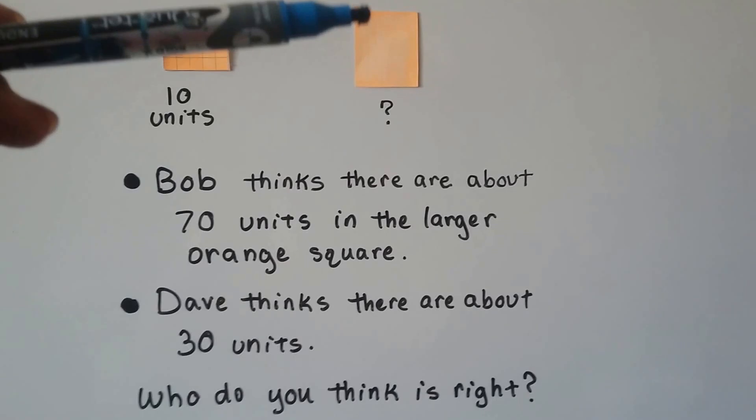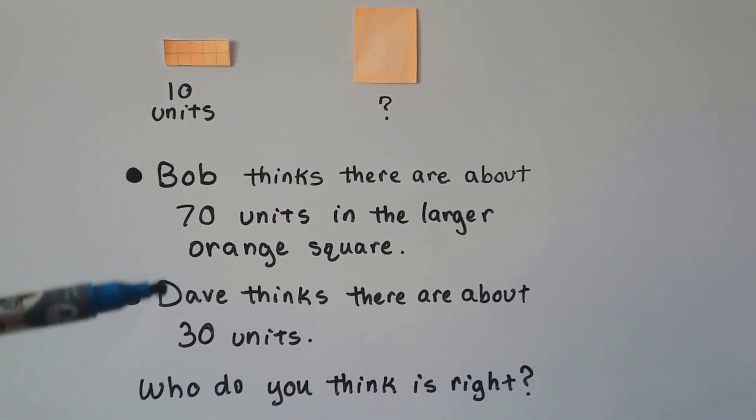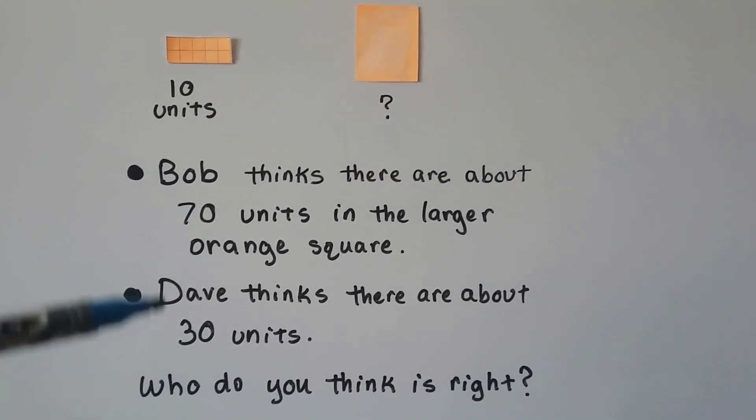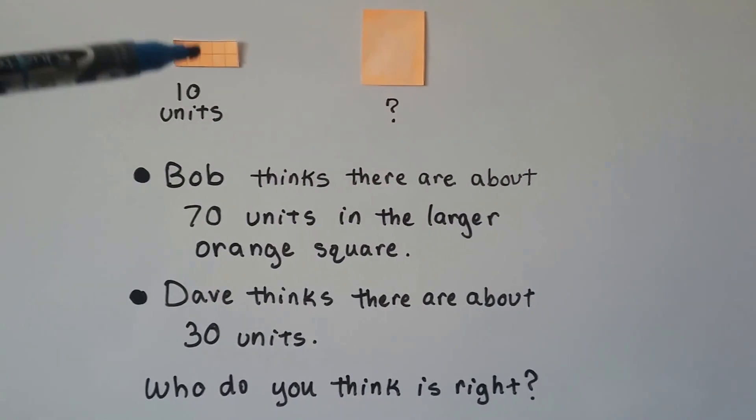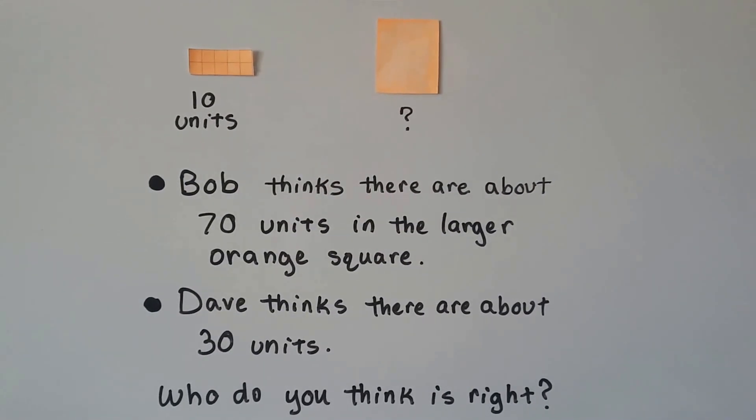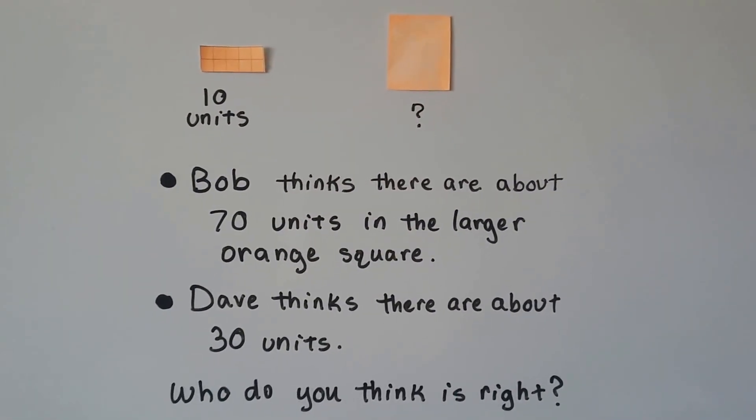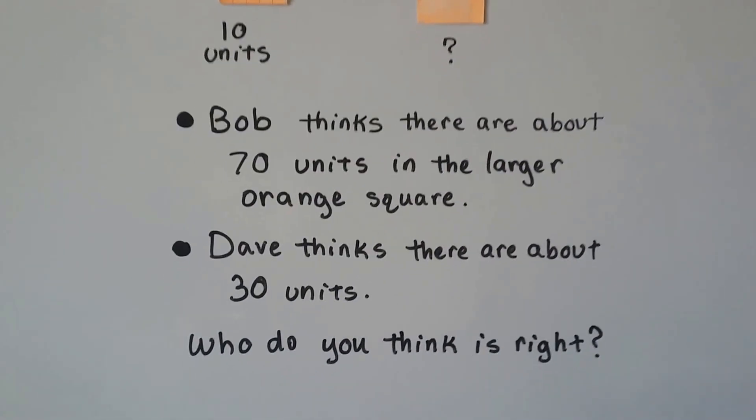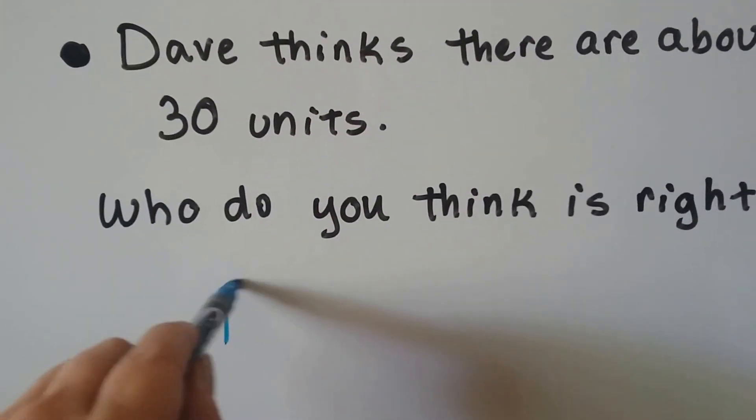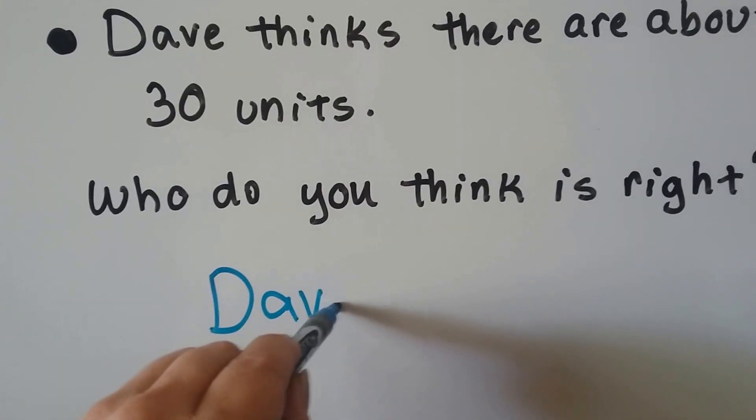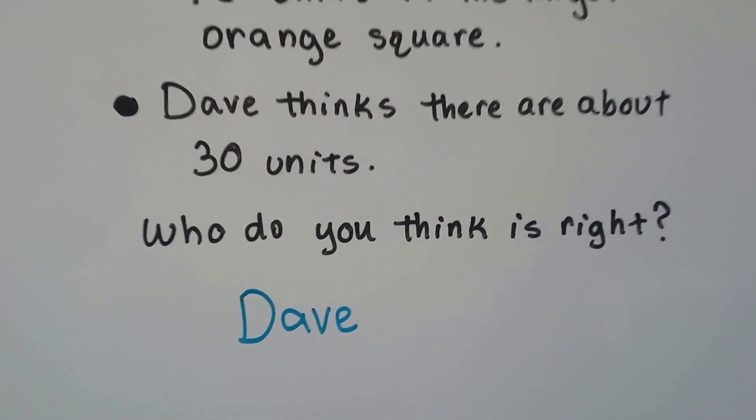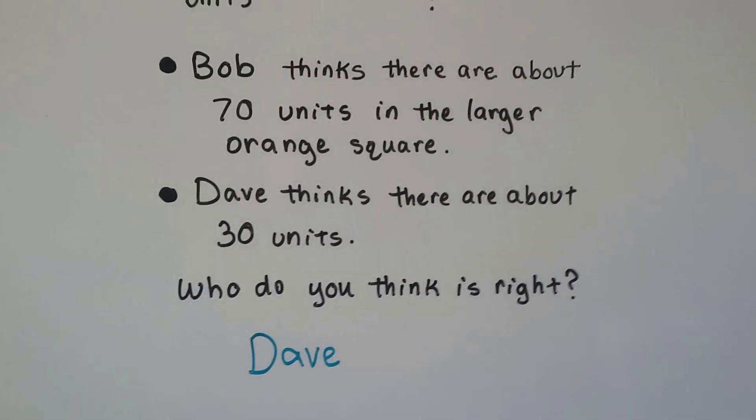About 10, 20, 30. So I think Dave is right. If there were 70, we'd need seven of these, wouldn't we? Yeah, that would be too many. So I think Dave is right. And if you said Dave, then you would be right, because there would be about 30.